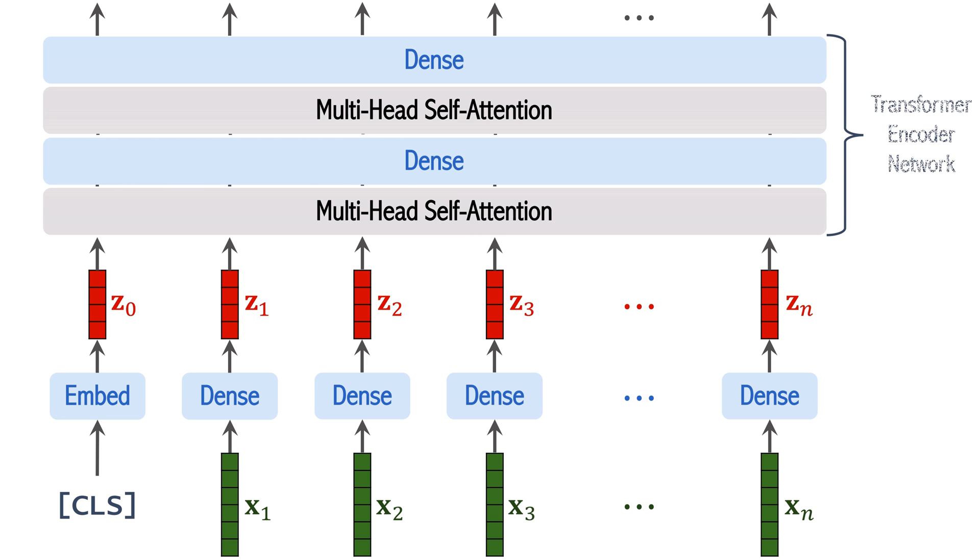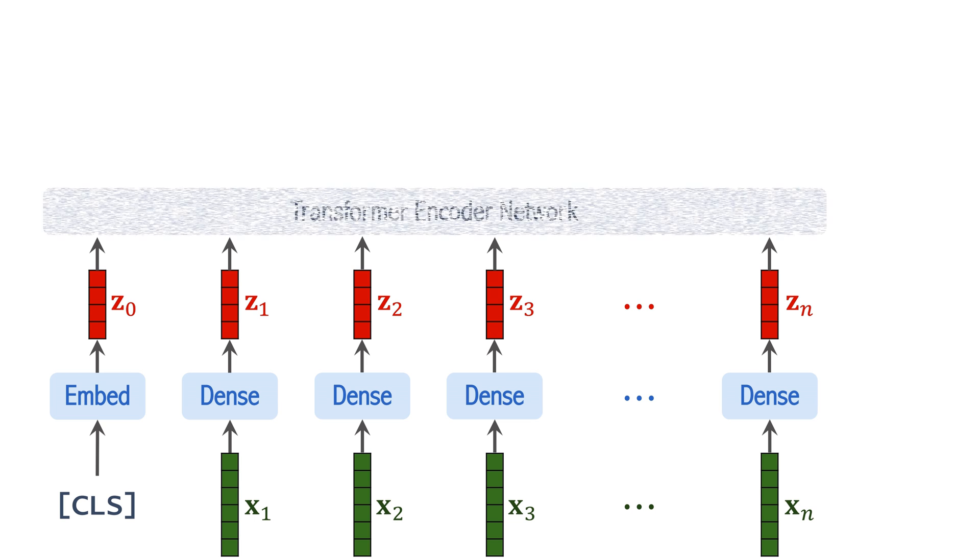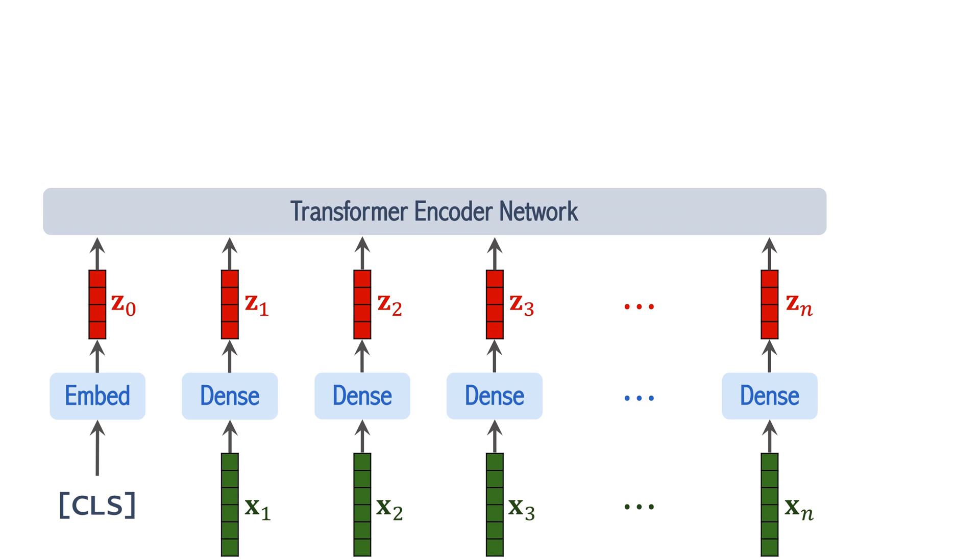The multi-head self-attention layers and dense layers constitute the transformer encoder network. The outputs are a sequence of n plus 1 vectors. Denote the self-attention layers and dense layers by such an encoder network.